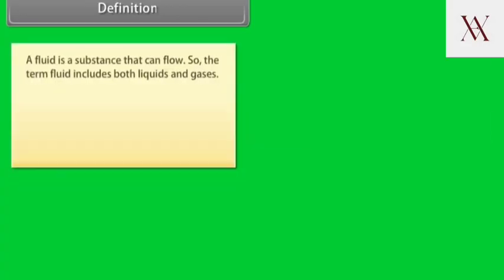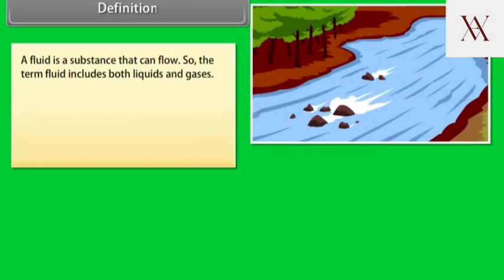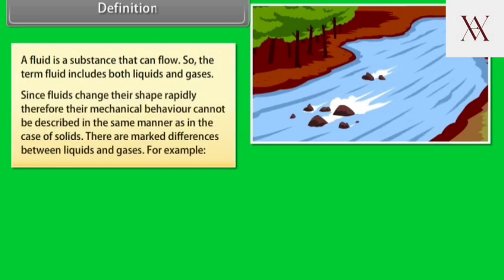Definition. A fluid is a substance that can flow. So the term fluid includes both liquids and gases. Since fluids change their shape rapidly, their mechanical behavior cannot be described in the same manner as in case of solids.